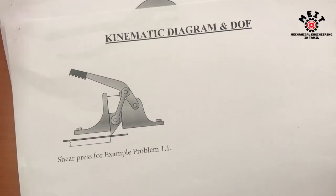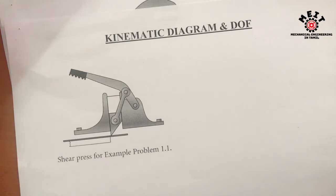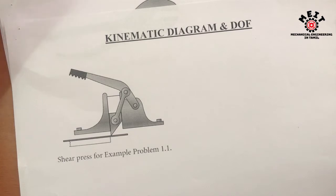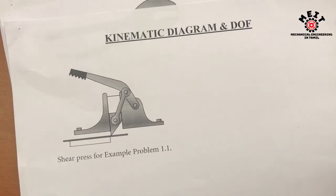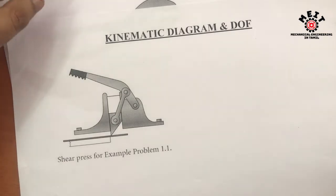In this lecture video we are going to see how to draw the kinematic diagram from the machine diagram, and also how to calculate the degree of freedom using the Kutzbach criterion. Before going to that, we should know what a kinematic diagram is. It is a diagram which illustrates the number of links, number of joints, and what kind of pairs will be there — apart from motion, forces, shape, and dimensions.